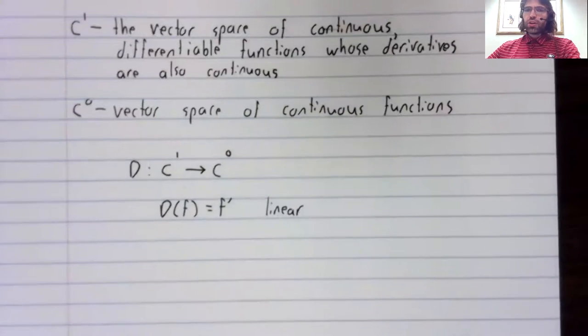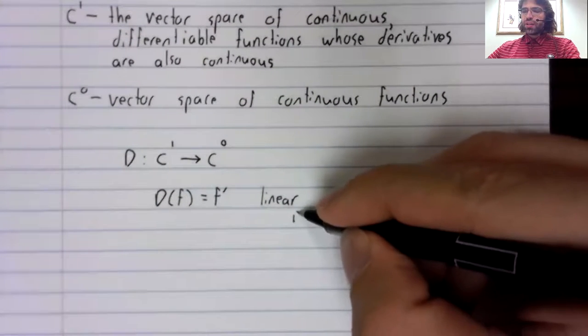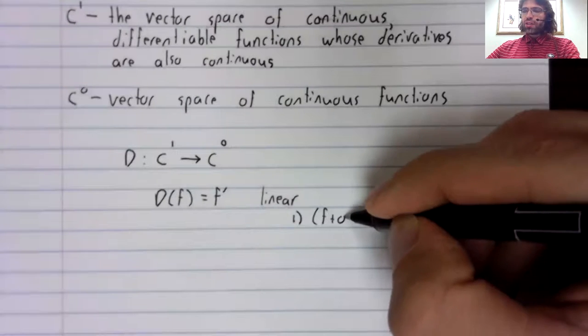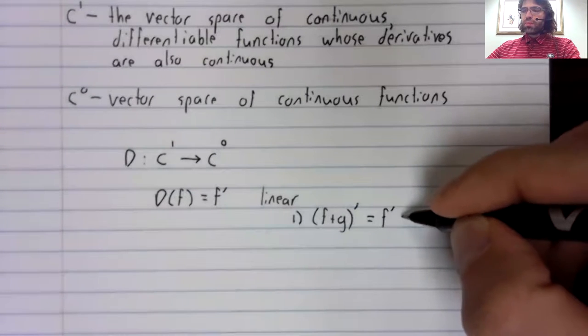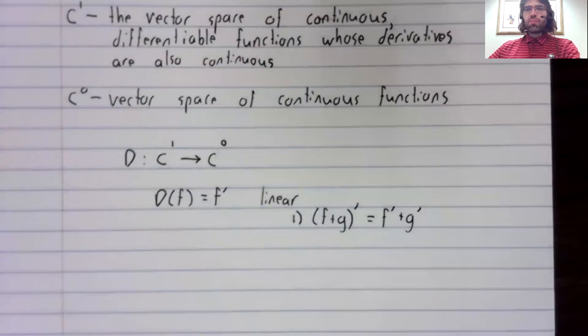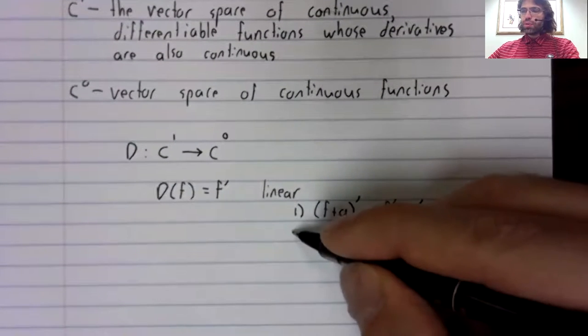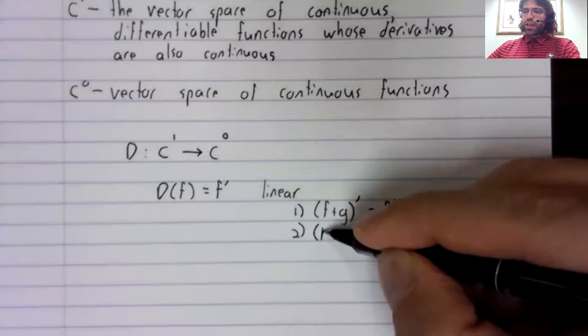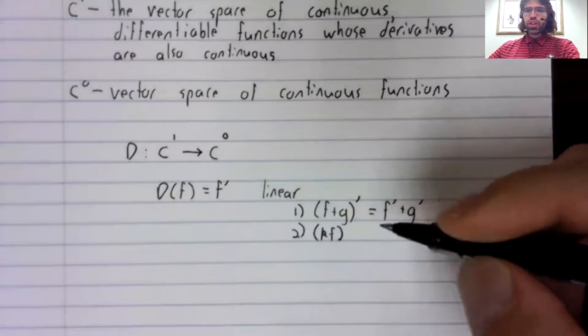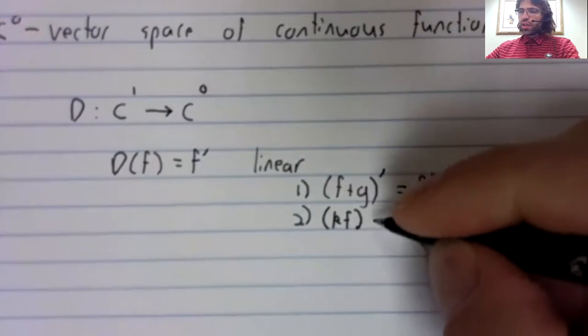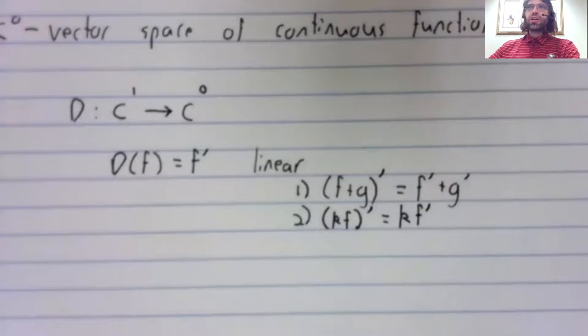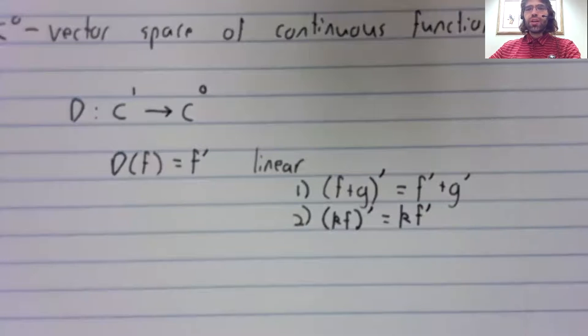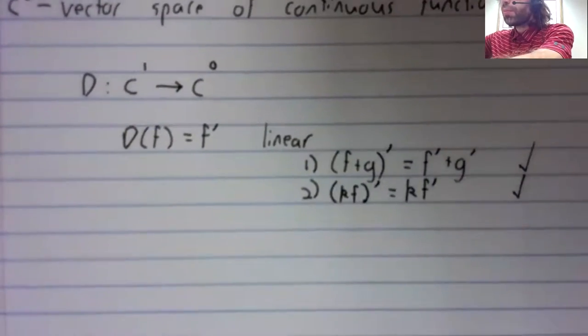And I claim that this is a linear transformation. To be linear, we need two things, and they're both elementary results from calculus. We need the derivative of a sum to be the sum of the derivatives, which is true. And if we have a constant times a function and we take its derivative, that should be the constant times the derivative of the function, which is also true. These are both results from calculus one.